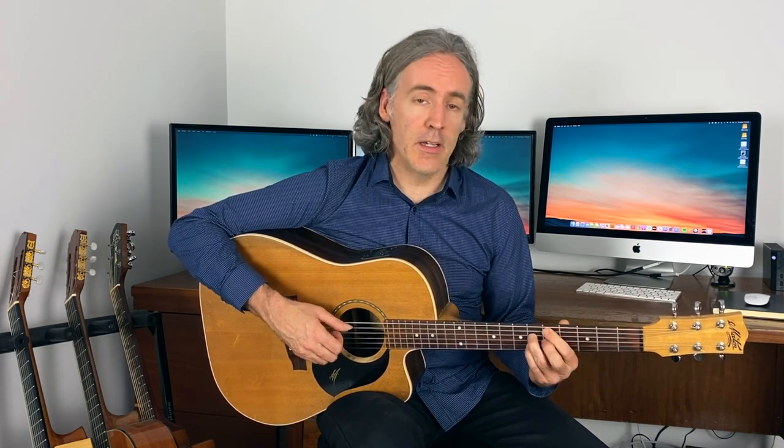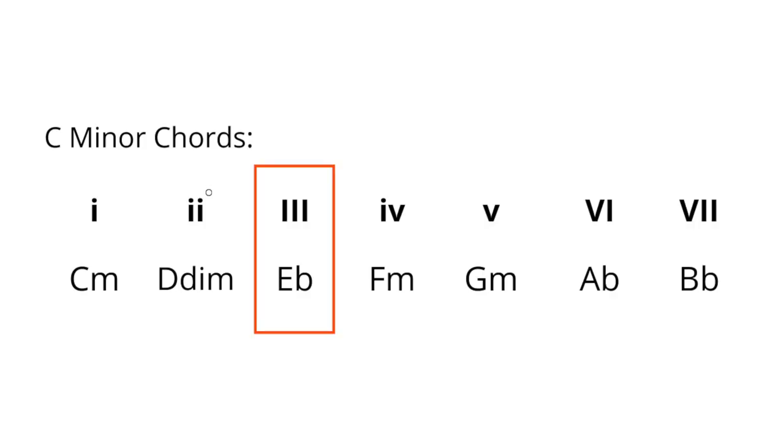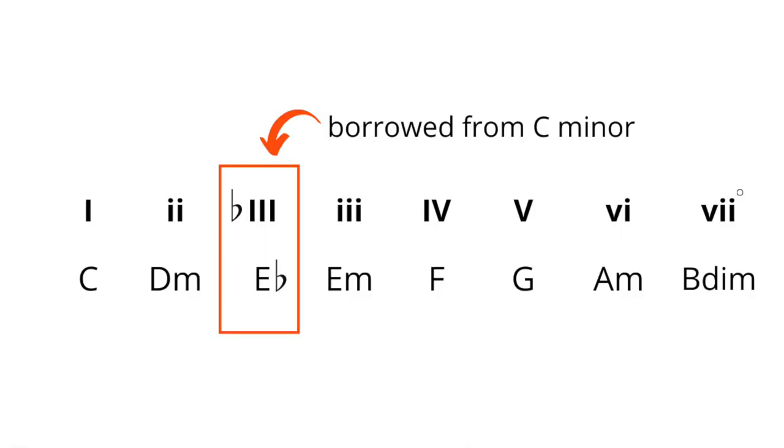Another common borrowed chord is taking the three chord from the parallel minor key. In C minor, parallel to C major, the three chord is E flat major. If we borrow that and put it into C major, that's what we call the flat three borrowed chord. In the key of C — C, D, E — E is the third. This is an E flat chord, so we call it the flat three major chord.